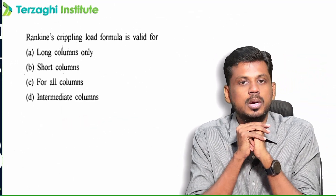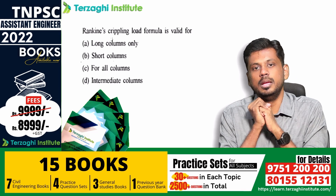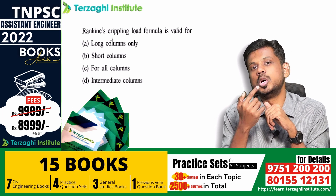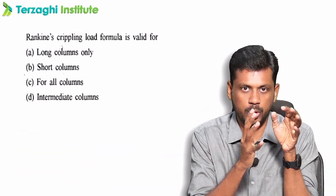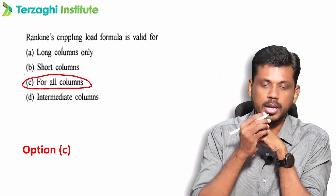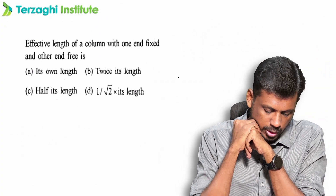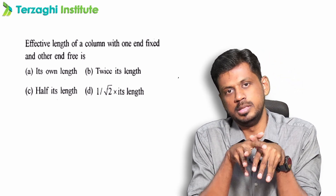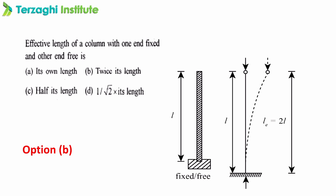All columns: Rankin's crippling load formula is valid for all columns. Euler's formula is valid only for long columns. Short column load carrying capacity: load equals stress into area. Both ends pinned — effective length is L. Both ends fixed — L by 2. One end fixed and other end free — 2L, that is twice its length.